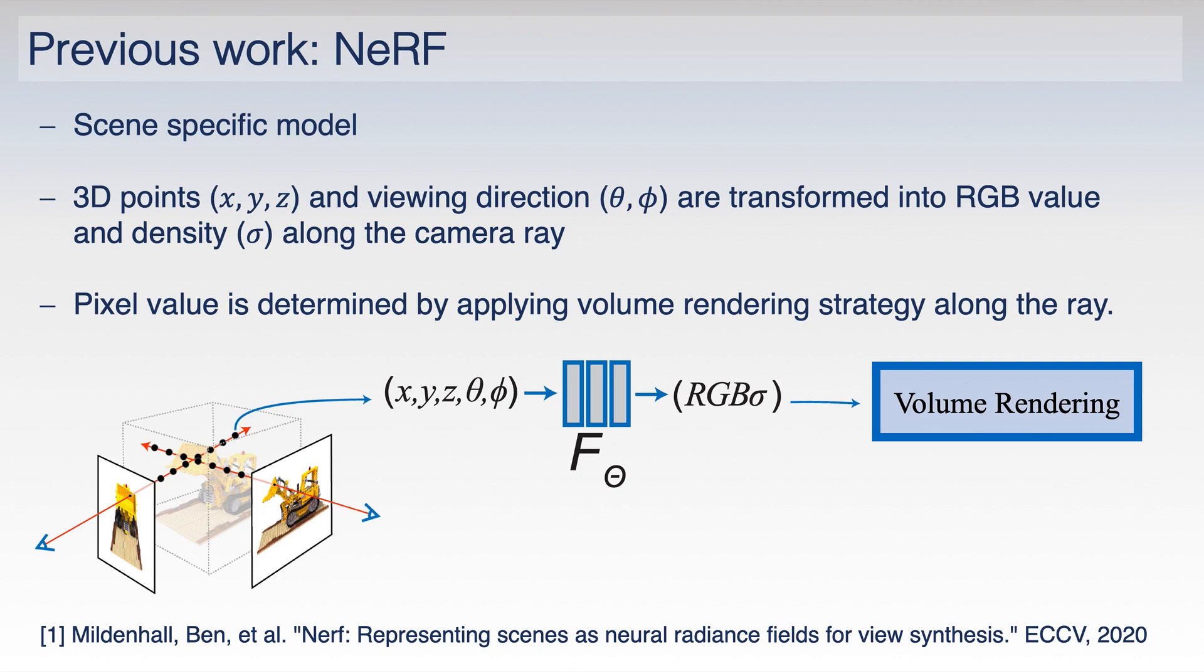Our work is based on neural radiance fields, where a radiance network predicts color and density for each 3D point and viewing direction in the given scene. The RGB values are then accumulated along the ray using volume rendering techniques to generate the color value for each individual pixel. This model is scene-specific and needs to be trained for each scene separately.